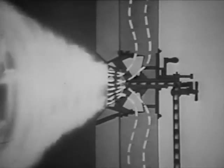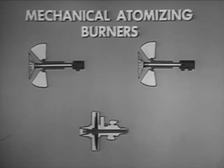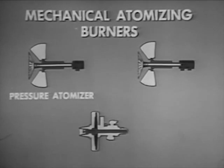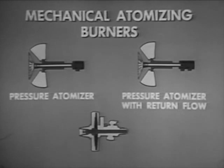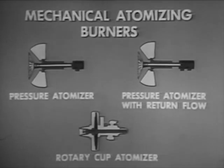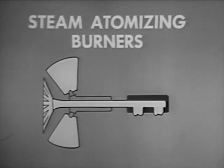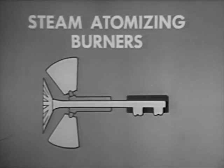Although all burners perform these two functions — atomizing the oil and mixing it with air — different types of burners atomize the oil in different ways. Most burners are mechanical atomizing burners. Some mechanical atomizers are the pressure type. There is also a return flow pressure atomizer. Another mechanical atomizer is the rotary cup type. A few burners use steam atomizers. In this film, we will see how these different types of burners work.